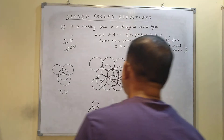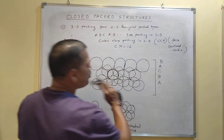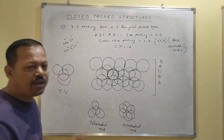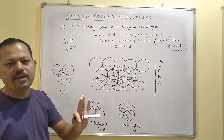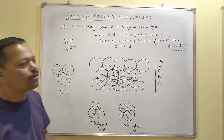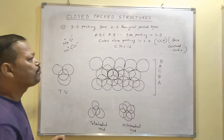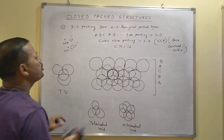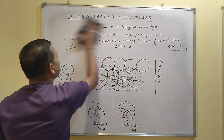So this is about packing in 3D. We have three types of packing: simple cubic packing, hexagonal close packing, and cubic close packing.